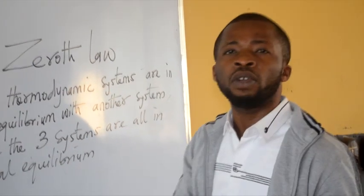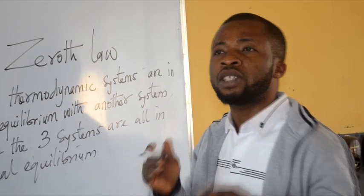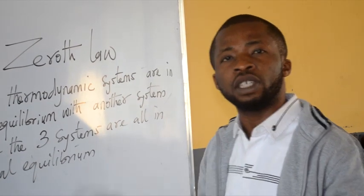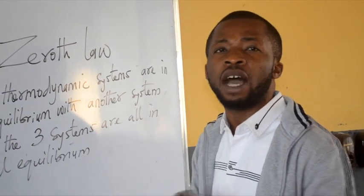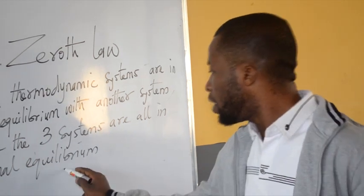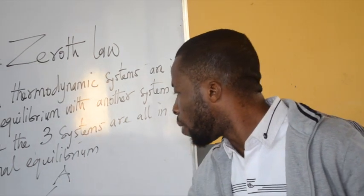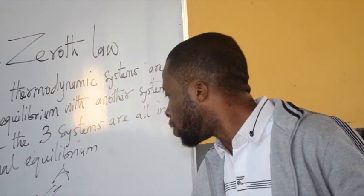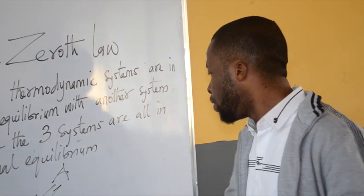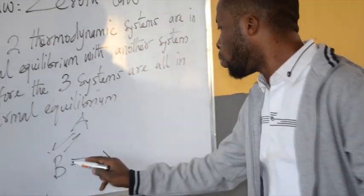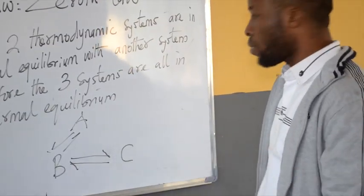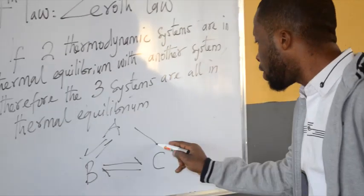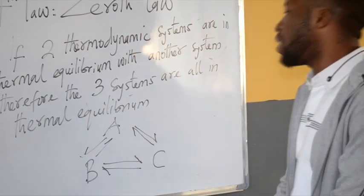Very simple. It simply means that if system A is in thermal equilibrium with system B, and system B is in thermal equilibrium with system C, therefore the three bodies are all in thermal equilibrium.